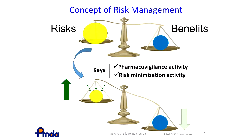There are two key activities in risk management. These are pharmacovigilance activity and risk minimization activity. With these activities, we can minimize the risks and improve the positive balance in favor of benefits.